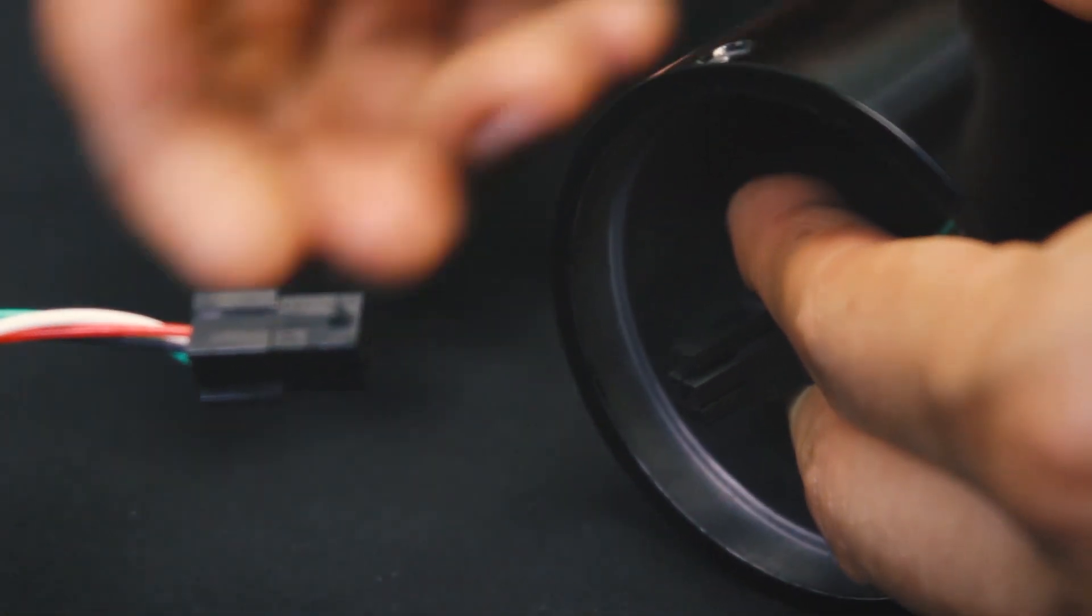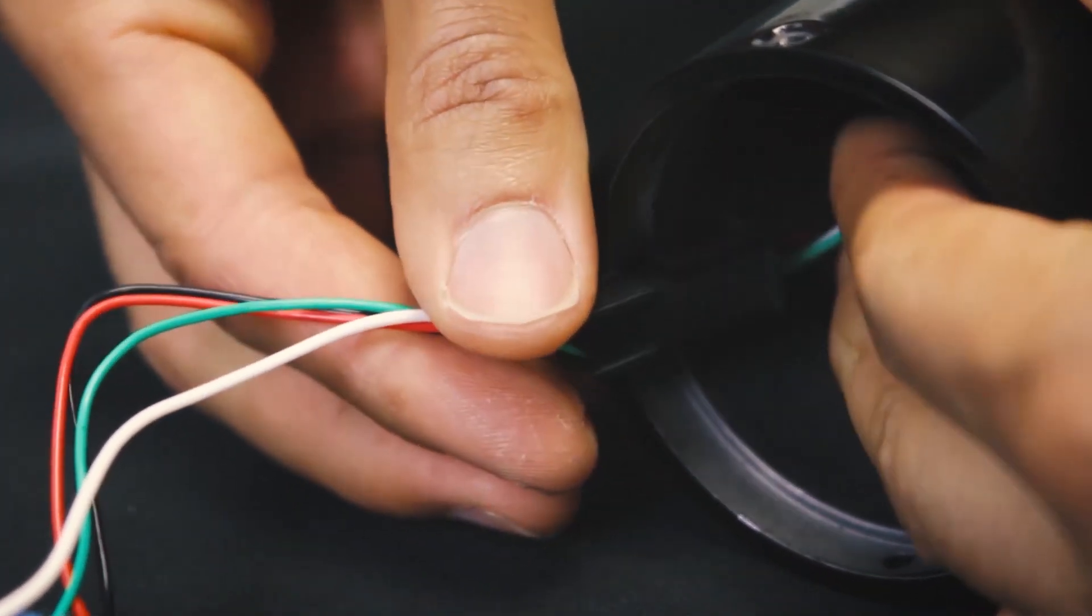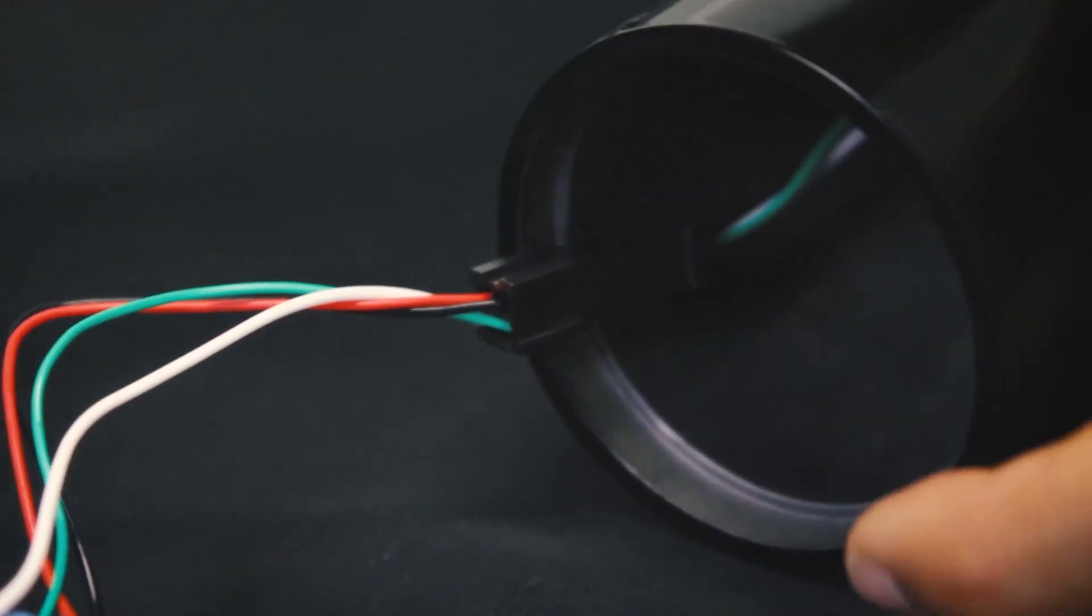Reconnect the motor wire assembly from the motor housing to the motor head. There should only be one configuration for clipping the motor wire assembly together.